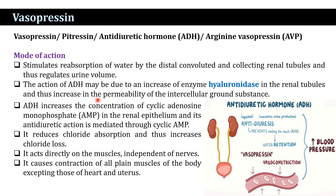Vasopressin reduces chloride absorption and increases chloride loss. It acts directly on muscles independent of nerves, causing contraction of all plain muscles of the body, excepting those in the heart and uterus.